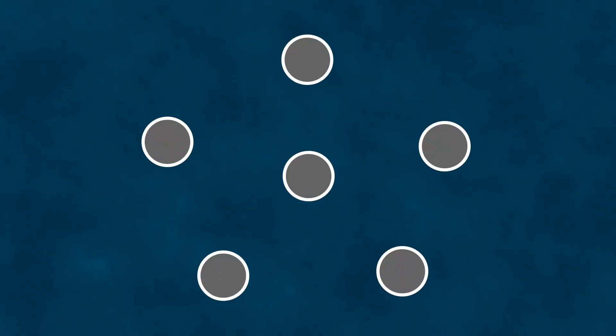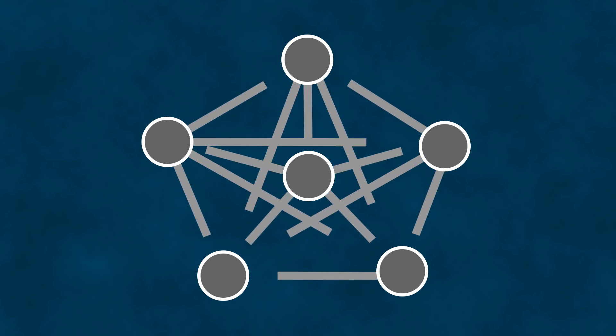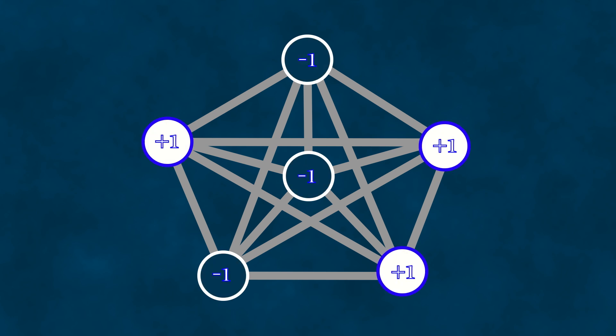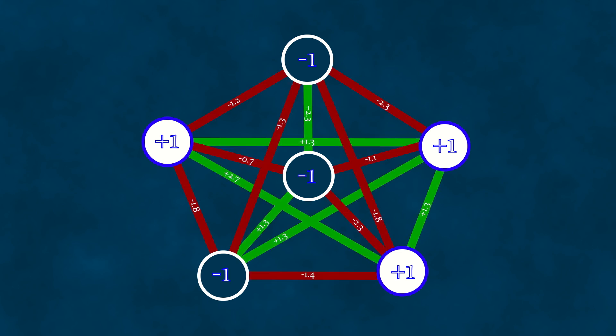The Hopfield network is composed of many nodes or neurons, each connected to every other neuron via links known as synapses, an analogy to the structure of the human brain that neural networks aim to imitate. Neurons can take on fixed values of minus one or one, while each synapse has a weight which can be any positive or negative number.